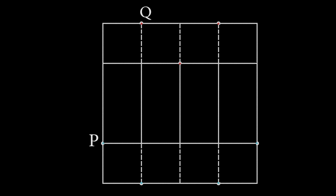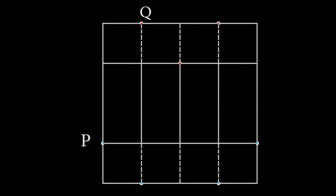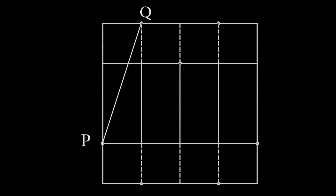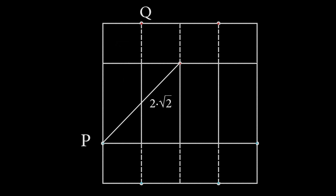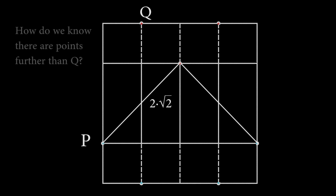Now we have a more complete picture of the possible paths we could take to get from P to Q. Choose any one of the points labeled P — which all refer to the same point on the box — and connect it to one of the points labeled Q. This is a candidate for the shortest path. Using the Pythagorean theorem, we can find the distances of each of these paths. The shortest path comes out to be 2 times the square root of 2, and due to the symmetry of the box, there are two equally short paths with this length. So how can we convince ourselves that there is some point on the box which requires a path longer than 2√2 to reach?